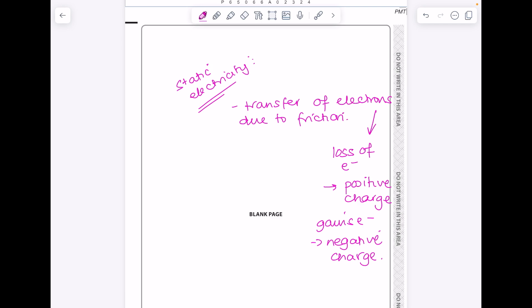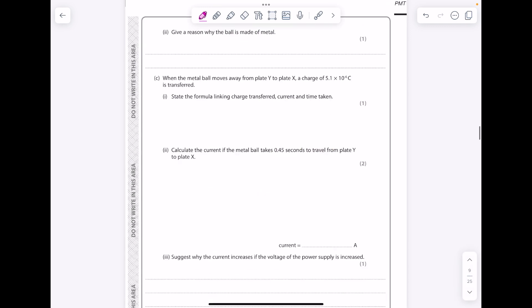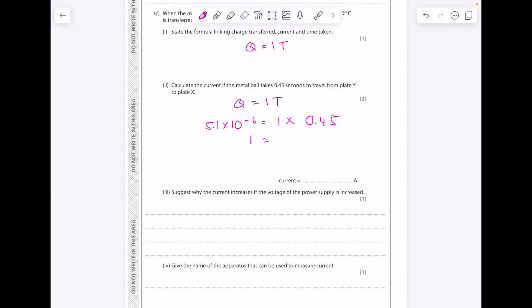If they ask you to prove that something's charged, you could use a charged rod and hold it near water, and you'll find that the water coming out the tap moves away. Don't forget the maths element of this topic. For example here, we're being asked to find the formula linking charge, current, and time - it's this one. Calculate the current if the metal ball takes 0.45 seconds to travel from plate Y to plate X. So it's just straightforward subbing in. We know our charge is 5.1 times 10 to the minus 6, we're being asked to find current, there's our time. Divide both sides by 0.45 to get a current of 1.1 times 10 to the minus 5.